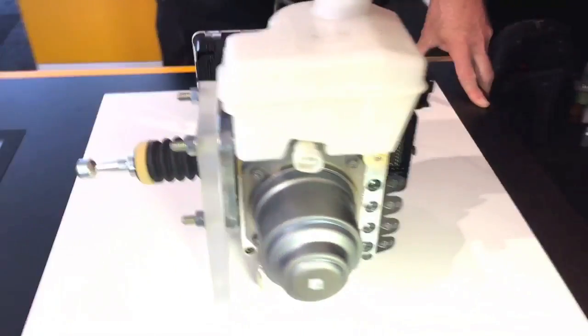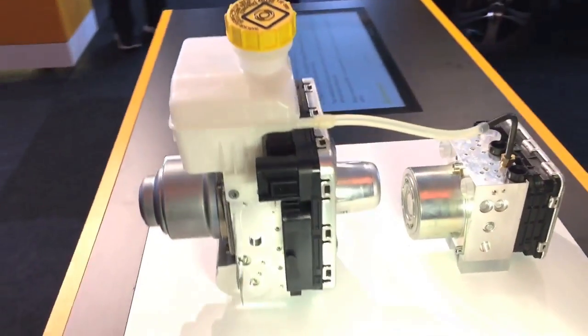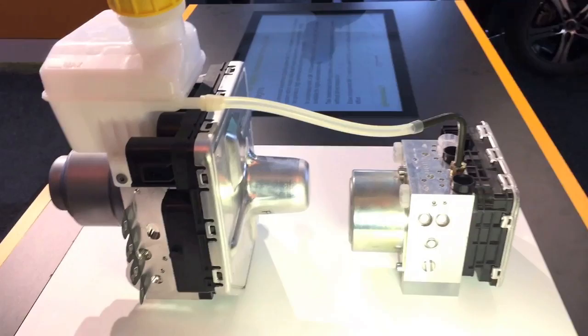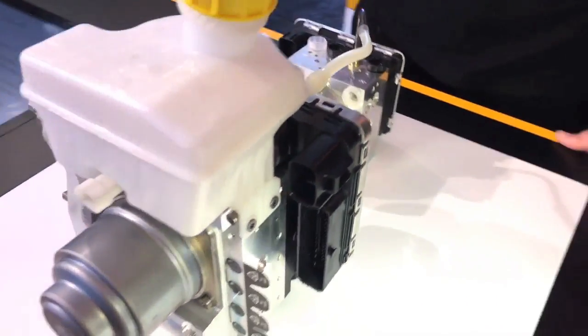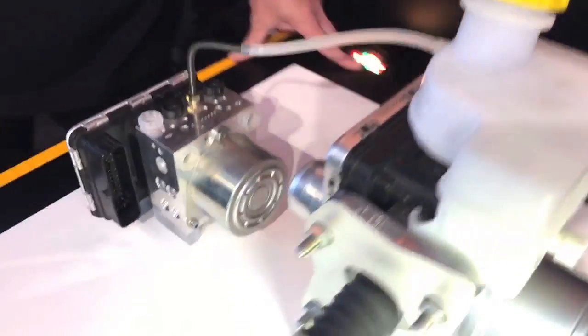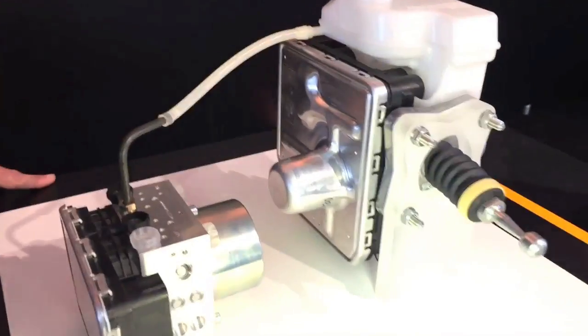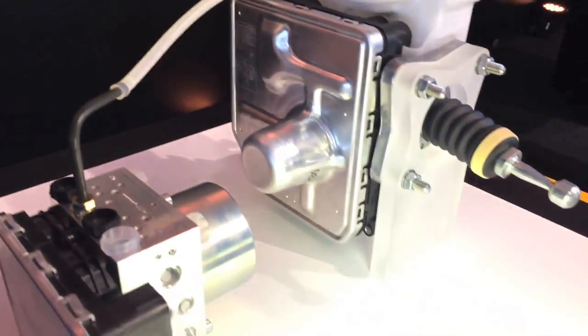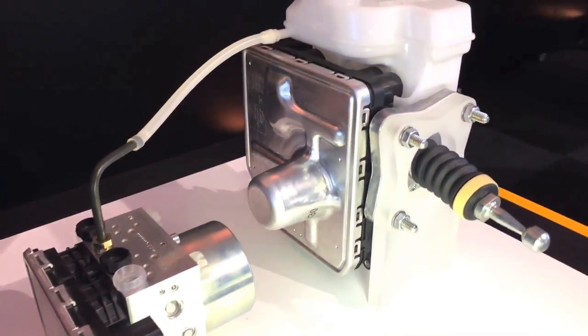This is our Mach C1 brake by wire system with very high performance for pressure build-up and also full recuperation compatibility for electric and hydraulic vehicles. This is now combined with an additional Mach 100 hydraulic brake extension unit, which means the system is fail operational.